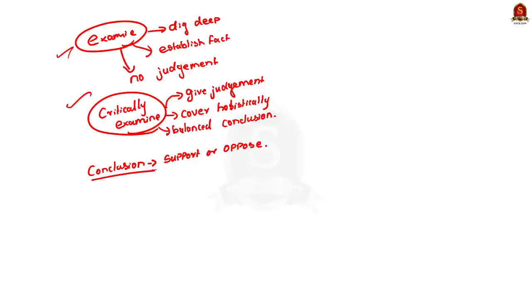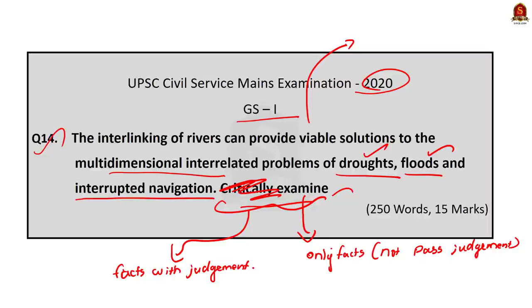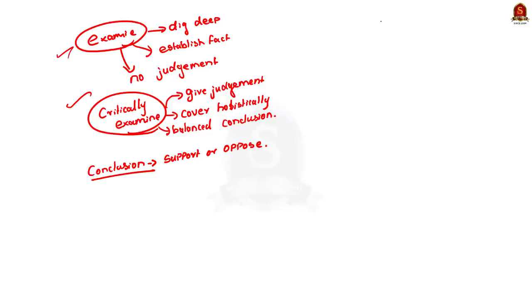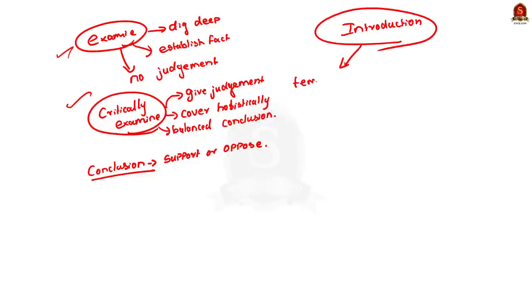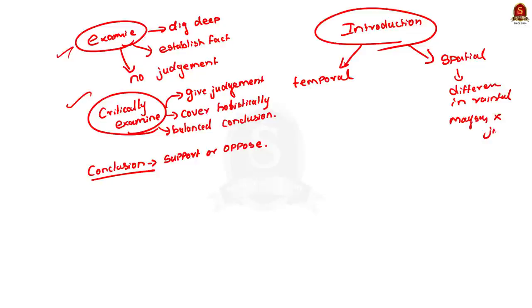Another point to note is that your answer should mention droughts, floods, and river navigation, as these three words are clearly given in the question. In the introduction you can write about both the temporal and spatial variability in the availability of rainfall in India. For spatial variability, mention how some places like the monsoon belt receive heavy rainfall while Jaisalmer has scanty rainfall. For temporal variability, state that more than 50 percent of precipitation in India takes place in about 15 days and less than 100 hours of rainfall happens altogether in a year.